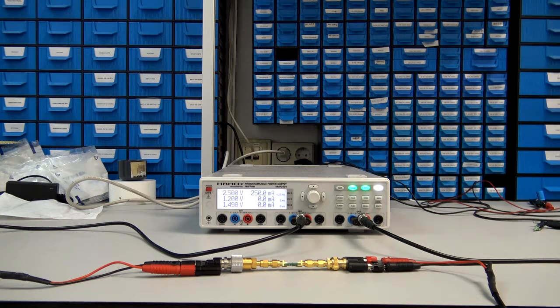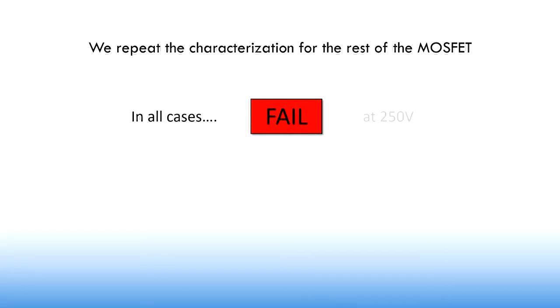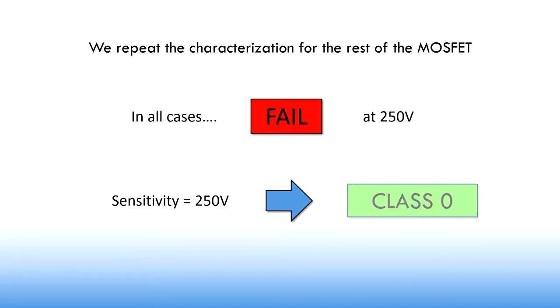If we measure the values of the drain current, we obtain the same result — there is no current at all. So we can determine that the MOSFET has been damaged. We repeat the characterization for the rest of the MOSFETs, and all of them fail at 250 volts. Therefore, we can conclude that this device belongs to class 0. If it hadn't failed, we would have continued with the test, applying the voltage associated with the next class — in this case, class 1A at 500 volts.